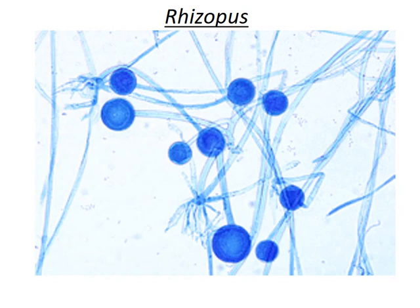With this, what we have tried to understand is the basic structure of four important groups of fungi — that is, Aspergillus, Penicillium, Rhizopus, and Mucor — using the lactophenol cotton blue staining method. I hope the video would be useful for you all to apply this in microbiology practical. Thank you.